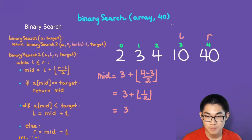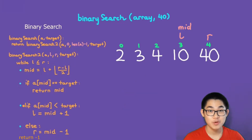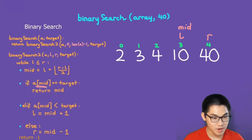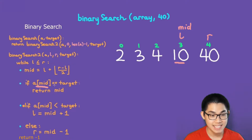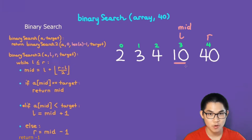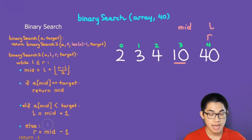We put mid at index 3. After calculating mid, we check the three case scenarios. Array at mid is number 10. Is 10 equal to 40? No. Is 10 less than 40? Yes, it is less than 40. So we put L to the right of mid. We then no longer need mid, so we erase it.